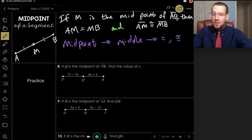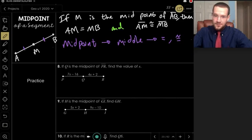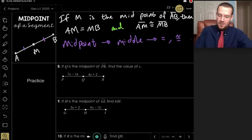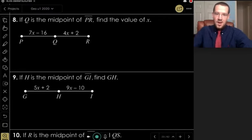Midpoint is in the middle, it makes stuff equal, it makes things congruent. It makes numbers equal, it makes measurements equal, it makes segments, it makes figures congruent. So let's see how that translates to some algebraic properties of a midpoint.